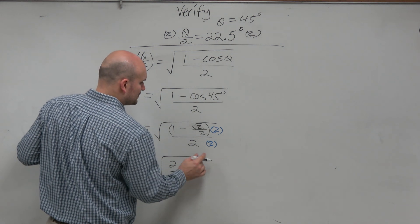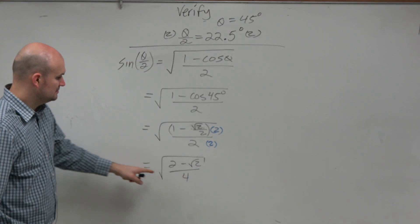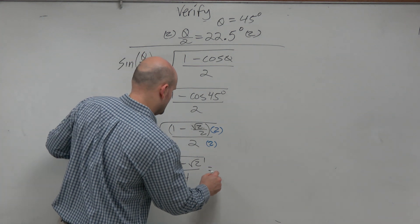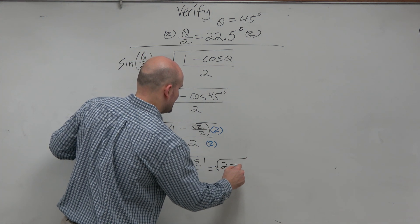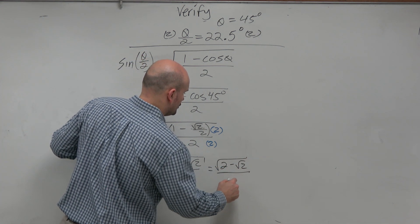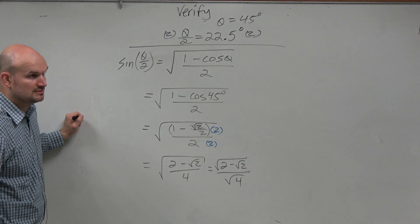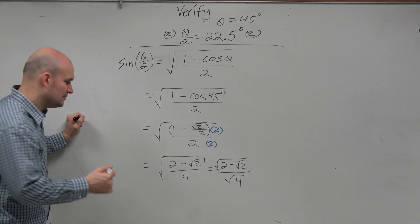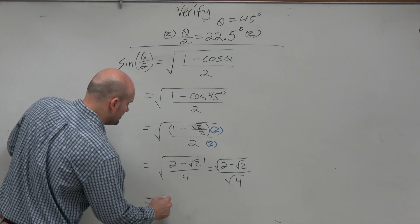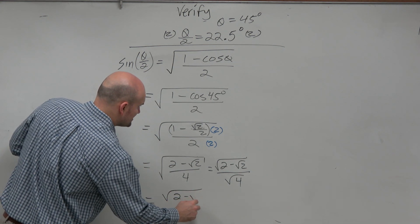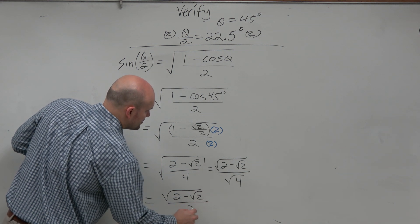Now, do you guys remember those rules of radicals from last class period? Can I break this up into the square root of 2 minus square root of 2 all over the square root of 4? Is that allowed? Can you break that up? Yeah, of course you can. And so therefore, I'm left with 2 minus square root of 2 divided by 2.